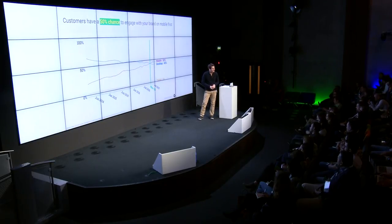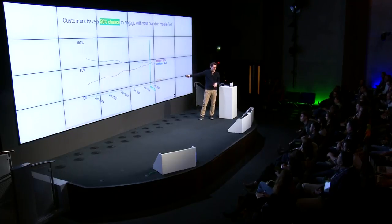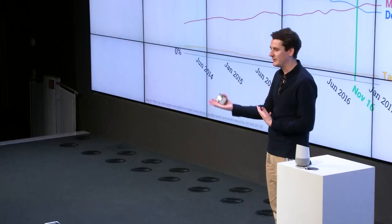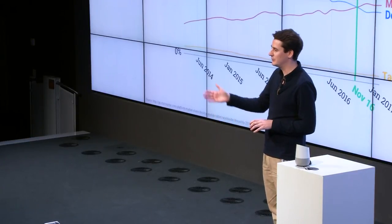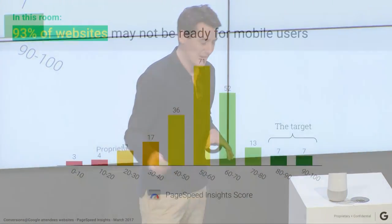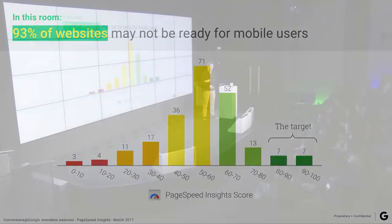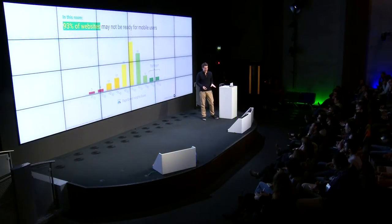We're now entering the first results of the speed test I did on your websites. Before showing the graph — and it's a bit of a scary graph — I'll explain the methodology. I ran something called the PageSpeed Insights score, a Google-made tool you can test on your own website for free. It measures different optimization aspects and gives a score from 0 to 100 on how optimized your website is. Our best practice is above 85. And this is what it looks like for this room right now: 93% of the websites here today are under the 80 bar, meaning 93% of websites may not be ready. There are other things that come into account — it's not an absolute measure — but the good news is there are tons of low-hanging fruits, and I'm going to speak about them.